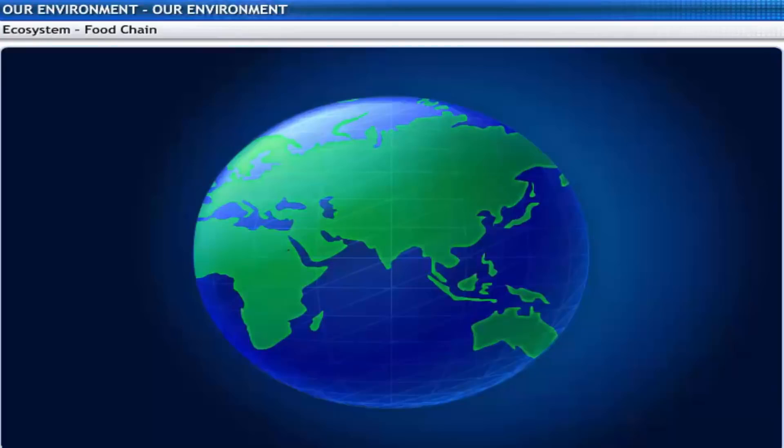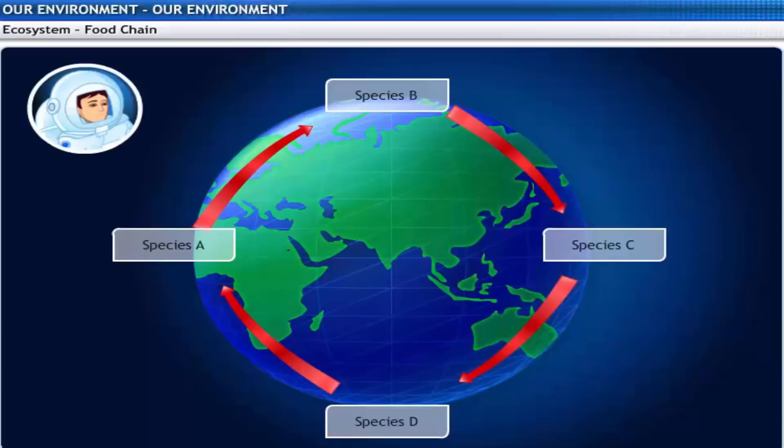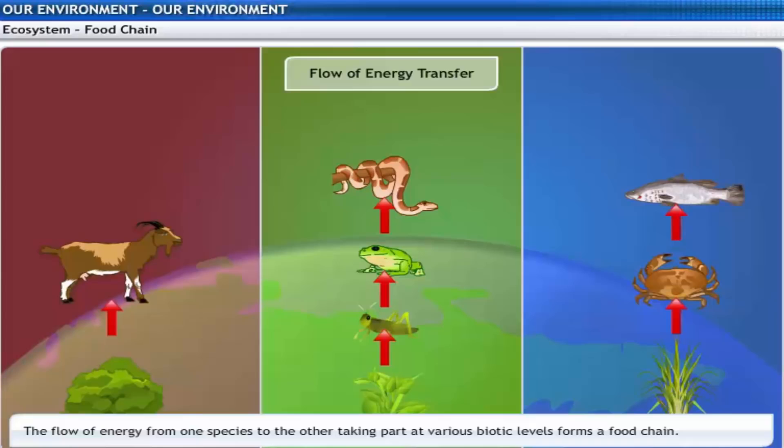We have spoken about the groups of organisms in an ecosystem. This brings us to a series or a chain. What is this chain? It is a flow of energy from one species to another, to yet another, and so on. You have seen organisms that feed on one another to sustain themselves in the ecosystem. This develops a food chain in the ecosystem.